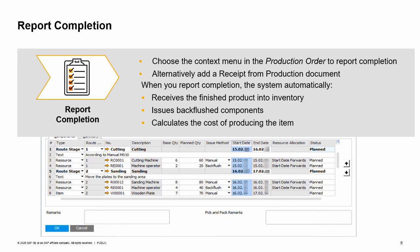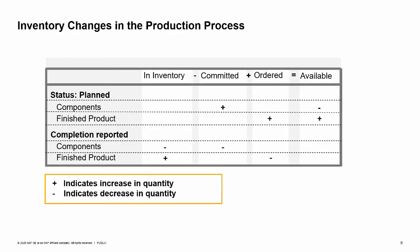This slide summarizes the changes made in the inventory data during the production process. When the production status is planned, a commitment is created for the components and the ordered quantity of the produced item increases. When the production order is completed, the finished product is received in inventory. Remember that components may be issued in different stages in the production process according to their issue method: manual or backflush.